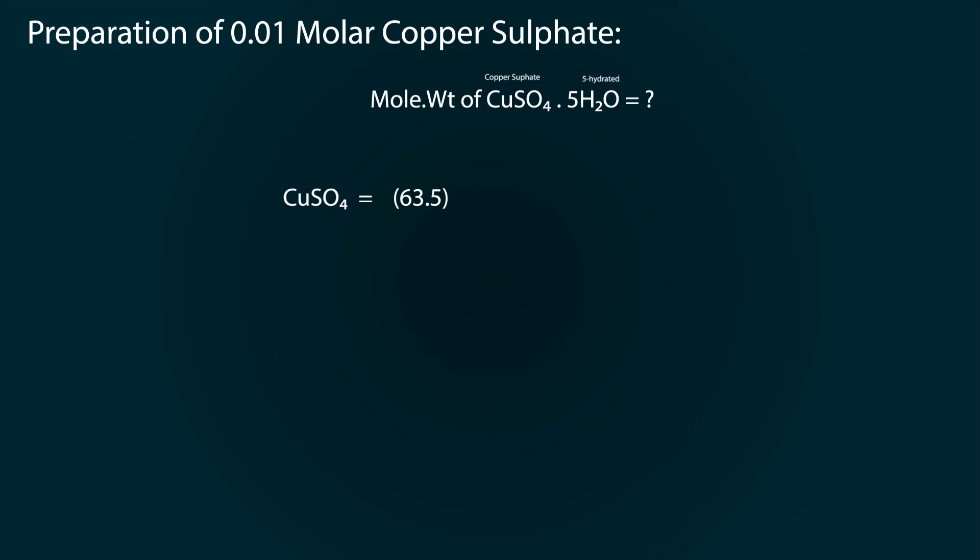63.5 for copper, plus 32 for sulfur, plus 16 into 4 for oxygen, plus 5 into 1 into 2 plus 16 for 5-hydrated.